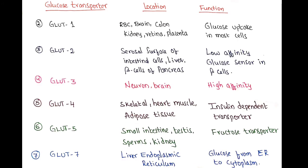Coming to other glucose transporters that do not require sodium: GLUT1 is present in tissues like red blood cells, brain, and colon, and is involved in glucose uptake in most cells. GLUT2 is present on the serosal surface of intestinal cells, liver, and beta cells of the pancreas. GLUT2 has low affinity towards glucose, meaning it can transport glucose only when glucose concentration is high. In this way, GLUT2 acts as a glucose sensor in the beta cells of the pancreas.